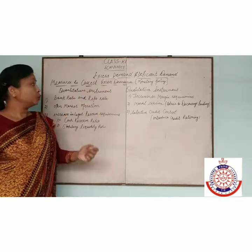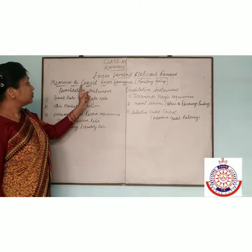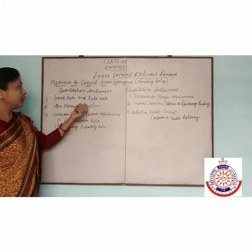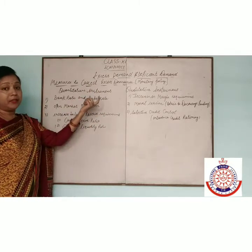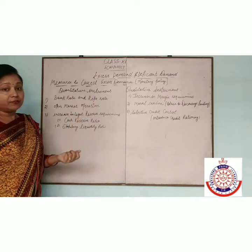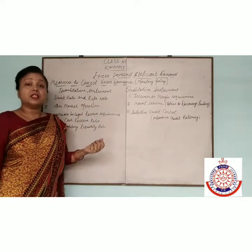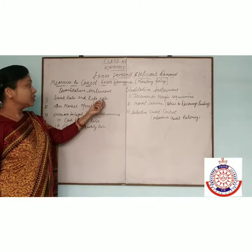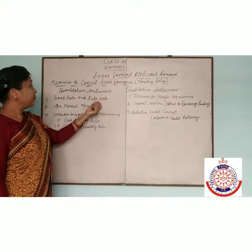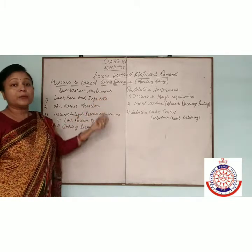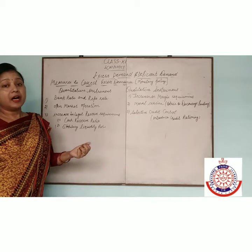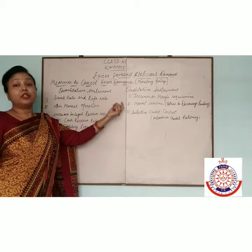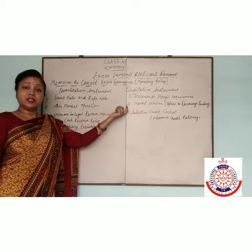If RBI wants to correct the excess demand, then RBI increases the bank rate. If the bank rate is increased, then the cost of credit is increased. Commercial banks also give loans at a high rate of interest. Then demand for money is decreased.